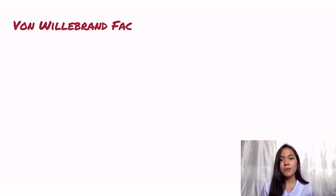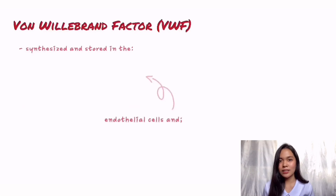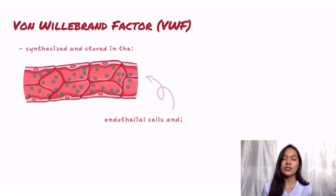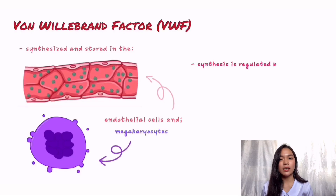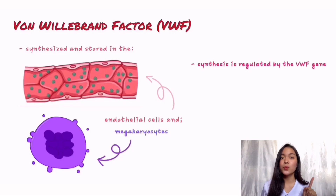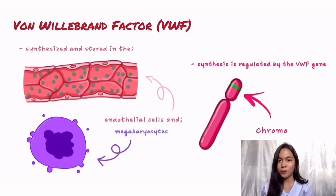Von Willebrand factor is synthesized and stored in the endothelial cells and megakaryocytes. Its synthesis is regulated by the von Willebrand factor gene located on the short arm of chromosome 12.